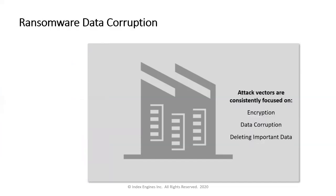Cybercriminals are doing basically three things. First, data encryption — including encrypting files, partial file encryption, and encrypting pages inside databases. Second, data corruption — changing file extensions to .lol or .encrypted and corrupting content in files. Third, mass deletions of data.